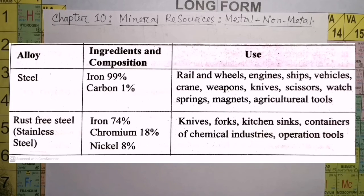Rust-free steel or stainless steel: Iron 74%, Chromium 18%, Nickel 8%. The composition is the best. You can see the knives, forks, kitchen sinks, containers used in chemical industries, and operation tools are made of stainless steel.